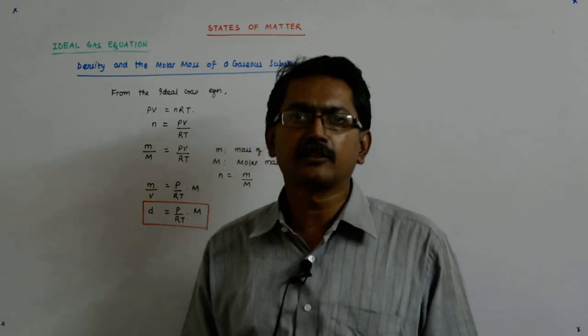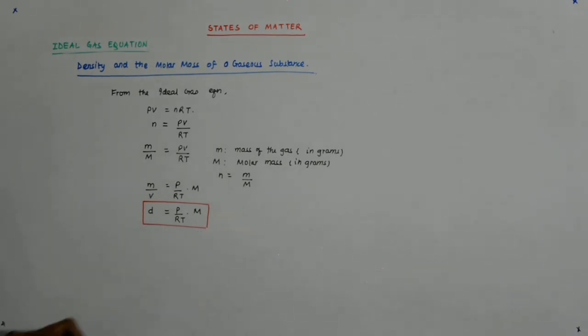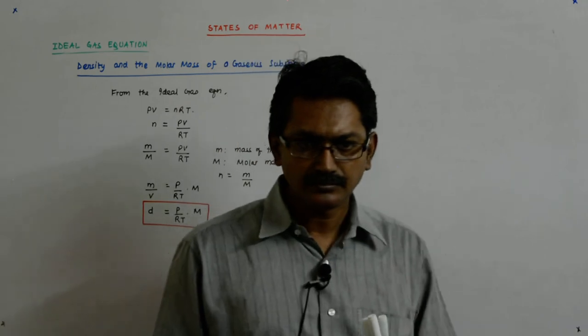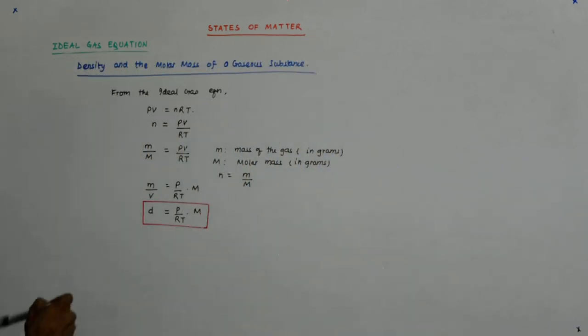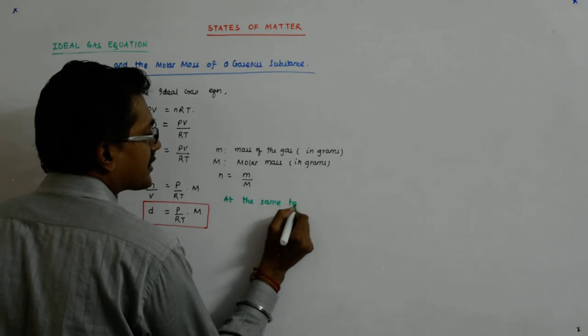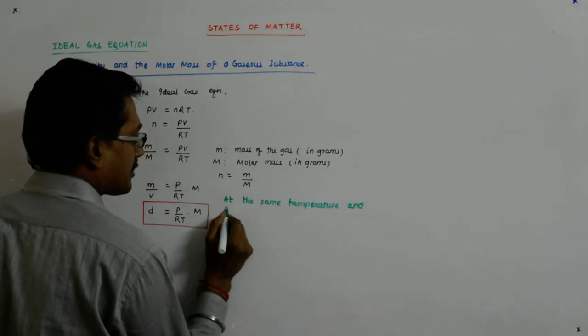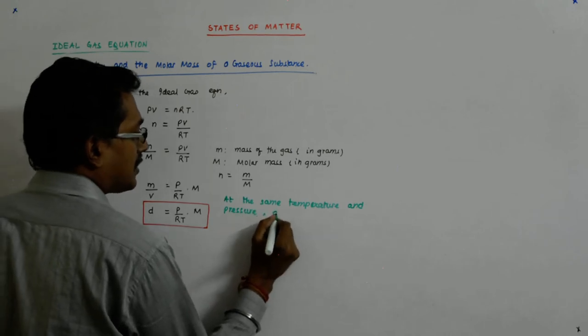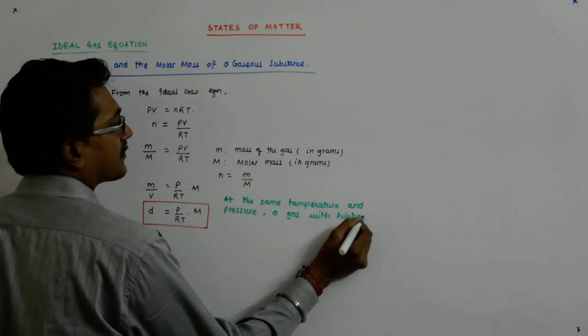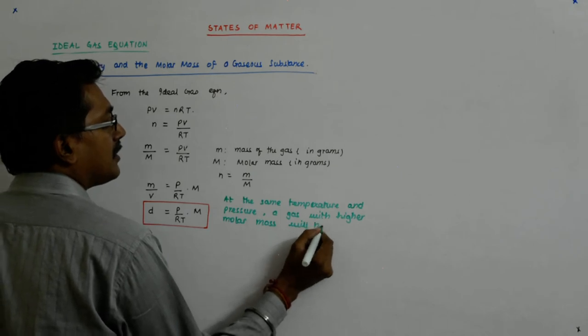The emphasis that I put in the beginning was due to this. I want you to understand that this equation, if you latch on to it and do some minor manipulations, you will get whatever is asked in a question. So I make that conclusion that at the same temperature and pressure, a gas with higher molar mass will have a higher density.